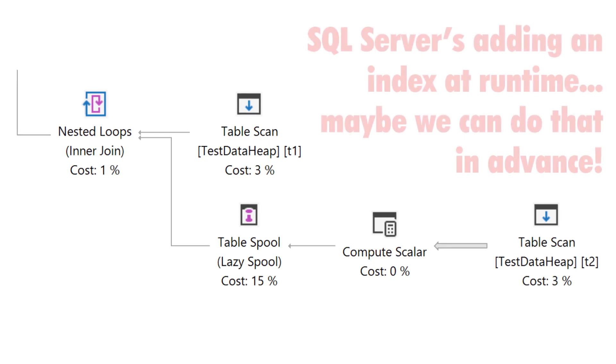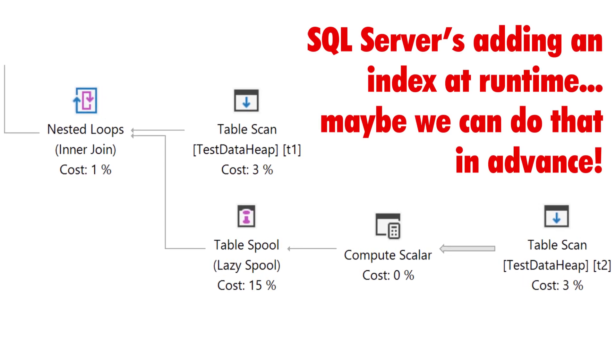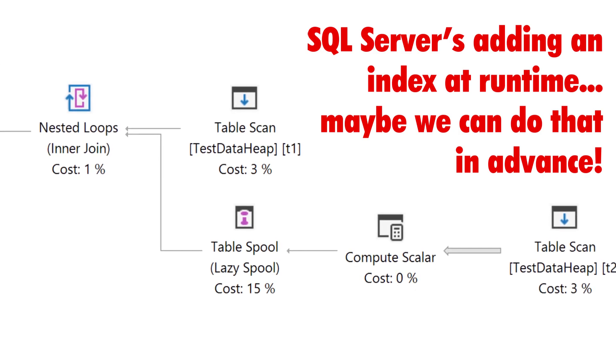Seeing that nested loops join followed by a key lookup gives me a hint that maybe there's something we can do to make our query perform better. Finally, because the data going into a nested loops join doesn't have to be sorted, that may be one reason why SQL Server chose that physical join operator. Sometimes there's nothing you can do — your data is coming in unsorted and it doesn't make sense to go through extra effort to pre-sort it. But it could also mean that you're missing a potential index where that data could come in pre-sorted, or maybe you can stage some of your data into a temp table first with some indexes on it, which can then go into a join operator that is more efficient than a nested loops join.